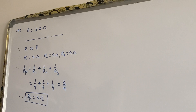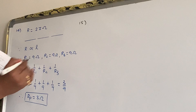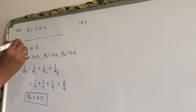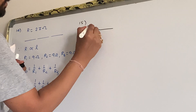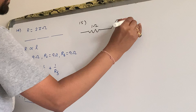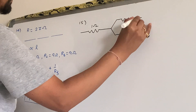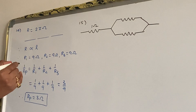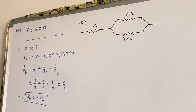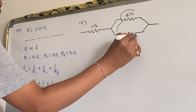Check question number 15. A circuit consists of a resistor of 1 ohm in series with a parallel arrangement of 6 ohm and 3 ohm. First I will draw the circuit: 1 ohm in series with the parallel combination of 6 ohm and 3 ohm.